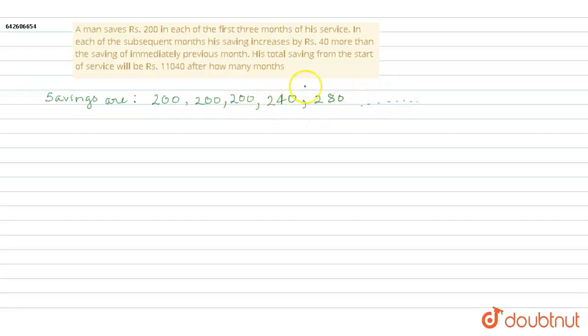So the savings will be 240, and after that it will be 280 and so on. As we can see, this series forms an AP, an arithmetic progression. If we keep aside the first two terms, we can write the AP as: 200, 240,